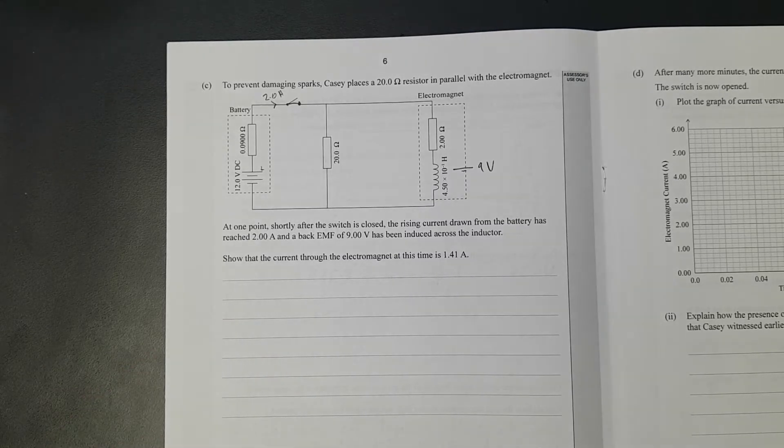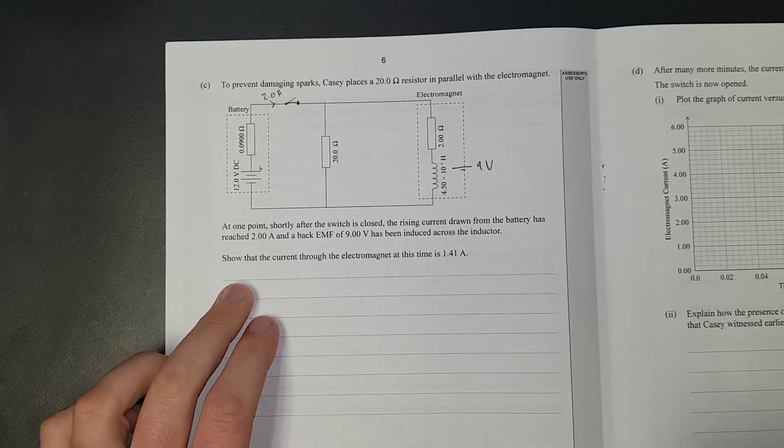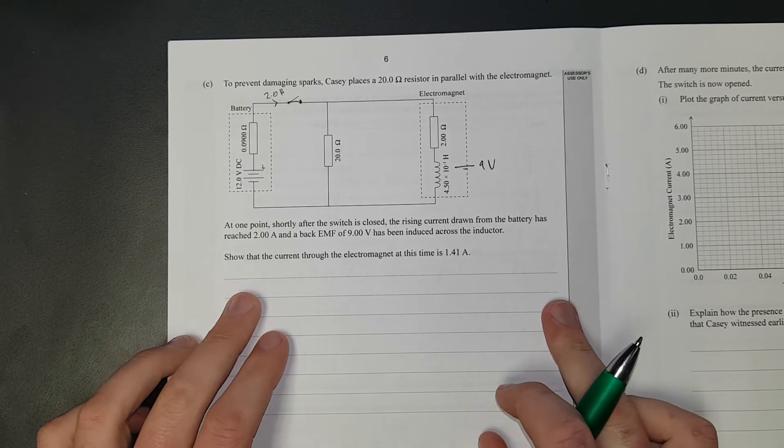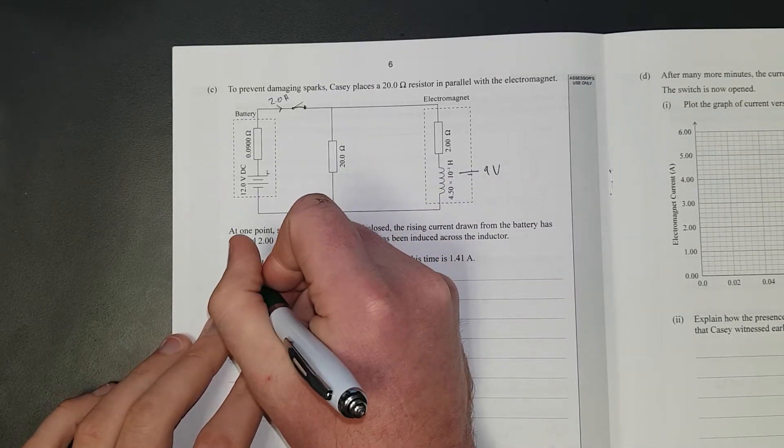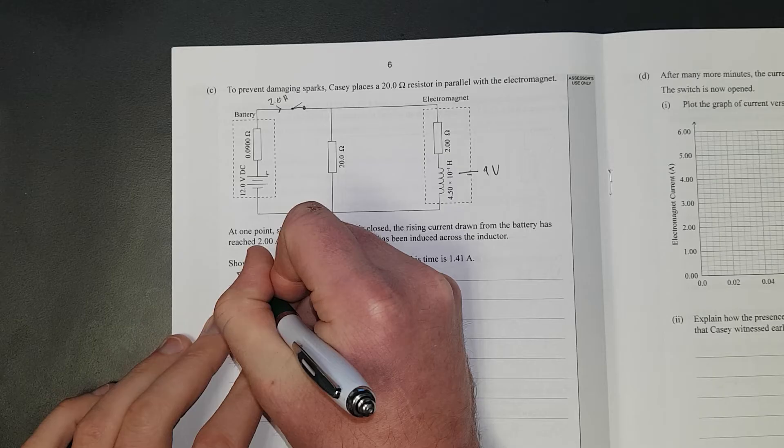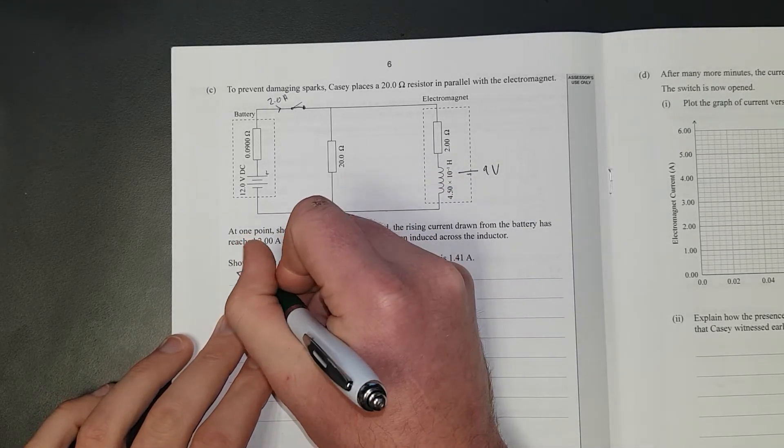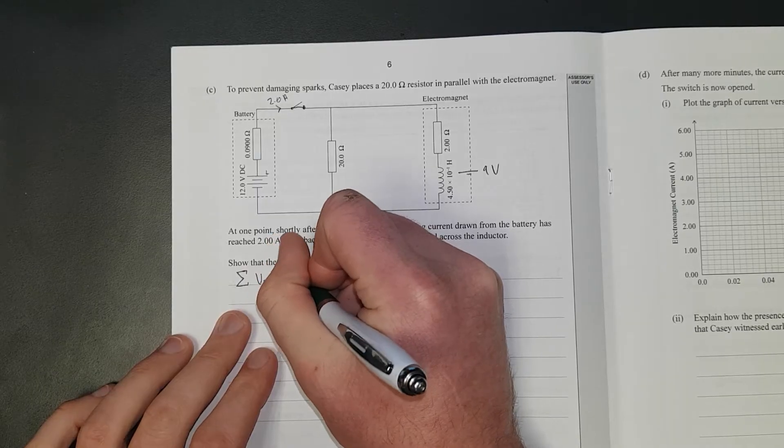This will be Kirchhoff's law of some description. So Kirchhoff's law states the sum of the currents in a node should add to zero. Now, basically it's a conservation of charge and conservation of energy. So I'm going to put the sum of the voltages in a closed loop is equal to zero.